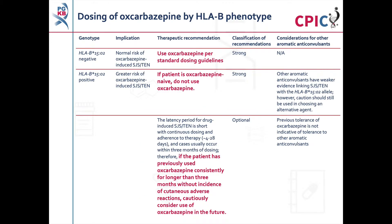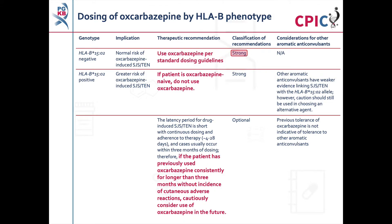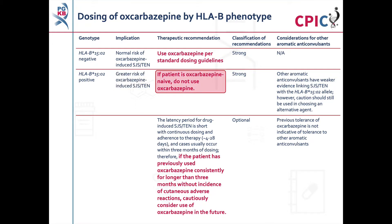These are the CPIC dosing recommendations for oxcarbazepine. Patients who are negative for the HLA-B*1502 allele are at a normal risk of developing oxcarbazepine-induced SJS-TEN and can be given oxcarbazepine using the standard dosing guidelines. This is a strong recommendation. Patients who are positive for the HLA-B*1502 allele are at an increased risk of developing oxcarbazepine-induced SJS-TEN, and oxcarbazepine should not be used in these patients if they are oxcarbazepine naive. This is a strong recommendation.